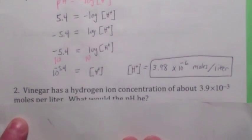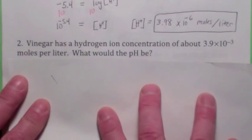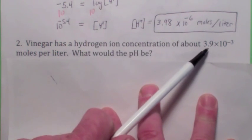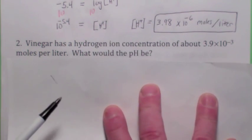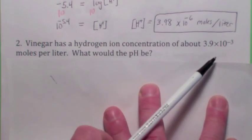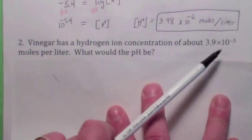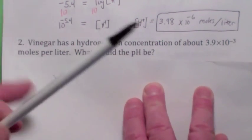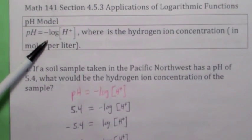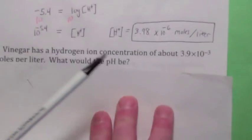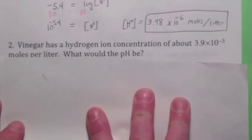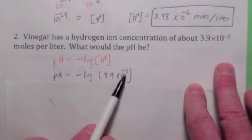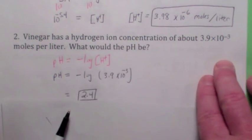How about going backwards? What if you know vinegar, which is rather acidic, has a hydrogen ion concentration of 3.9 times 10 to the negative 3rd moles per liter — what would the pH be? From what we said earlier, the pH would basically be the negative of the exponent, right? That's why we put that negative sign there — just so the result comes out positive. So it'd be about 3. But when you actually plug in 3.9 times 10 to the negative 3rd and take the logarithm, then multiply by negative 1, you get 2.4.